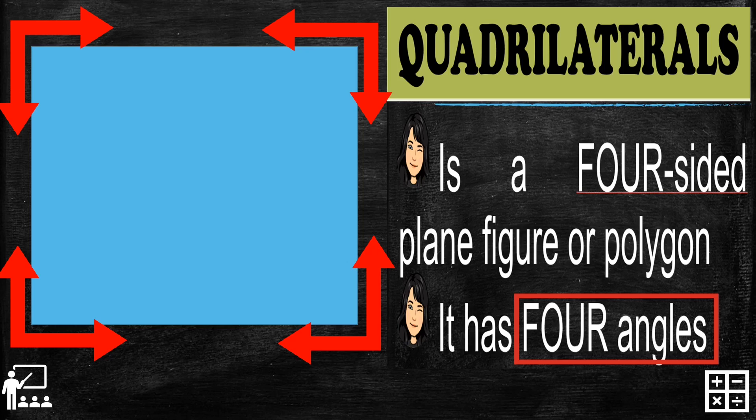So that is the difference between triangles and quadrilaterals. A triangle has three sides and three angles, while a quadrilateral has four sides and four angles.